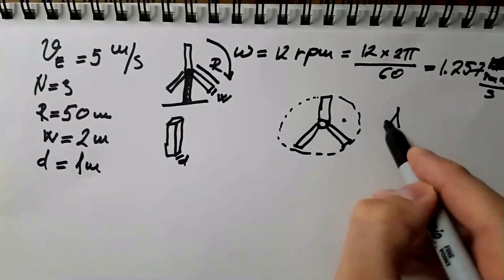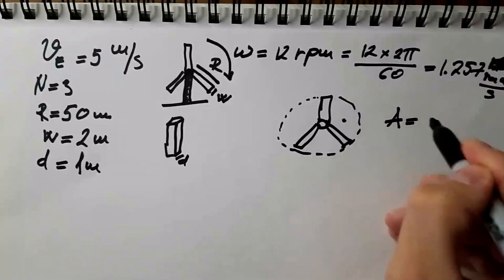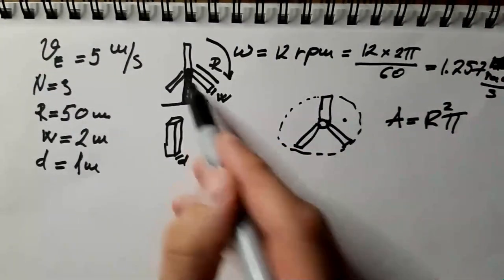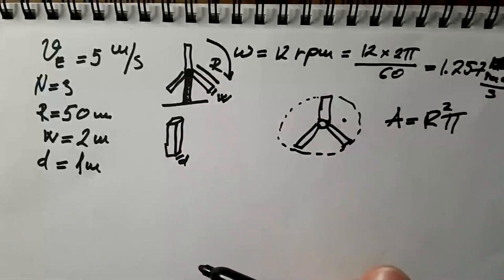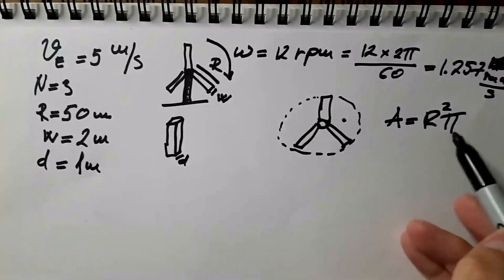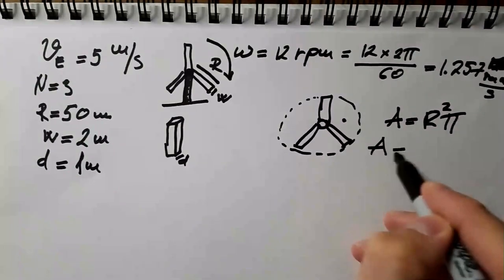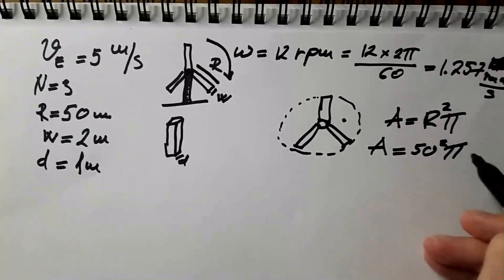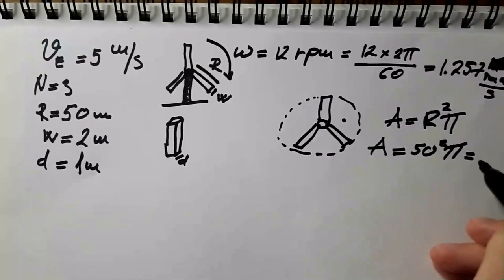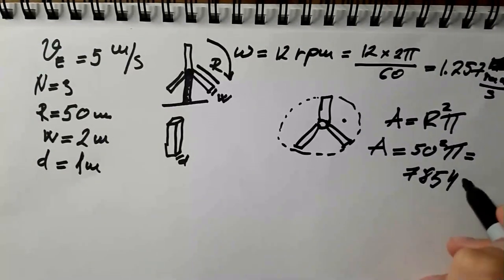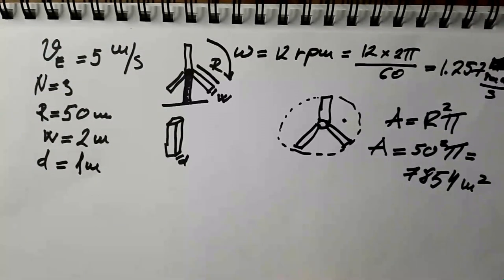So what is the swept area? The total area should be r squared pi, where r is the radius or the length of the whole rotor of the wind turbine or the length of the blade. So area is then 50 square times pi, which ends up being 7854 square meters. But the exact numbers are not so important, really.